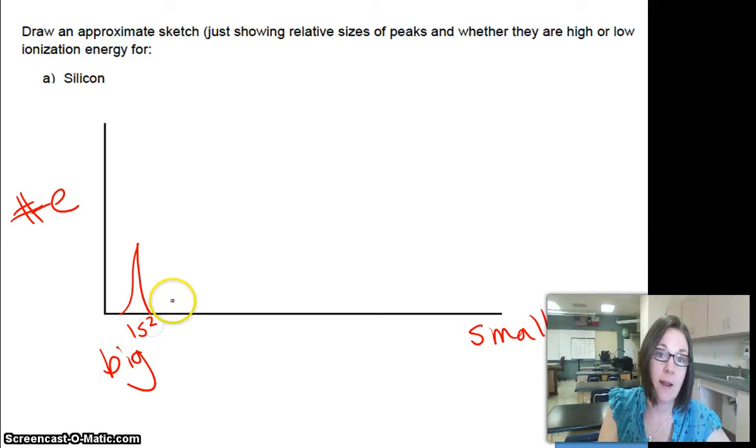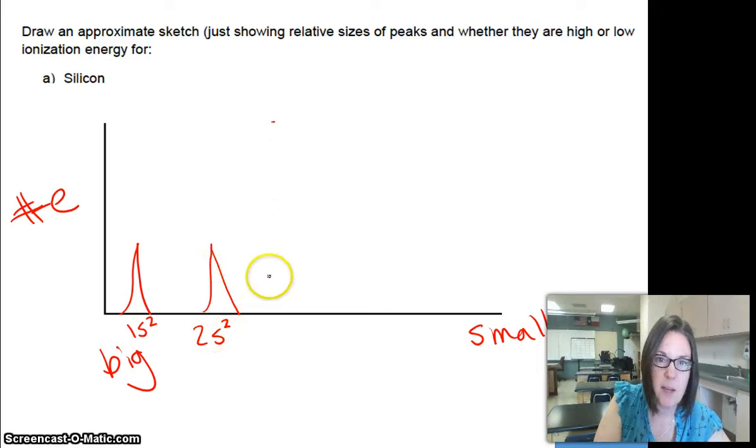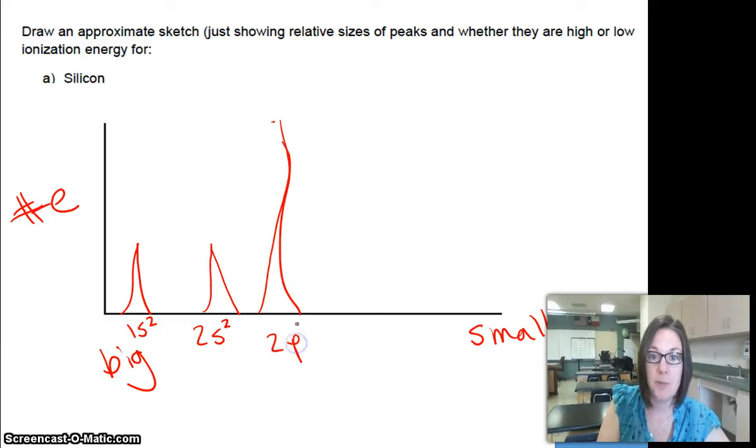The first electrons on the big, let's make our peak here, that's going to be 1S2. A little bit higher, we're going to make a same height peak, that's going to be 2S2. So then we have to go, let's see, probably up to here. That would be our 2P6.